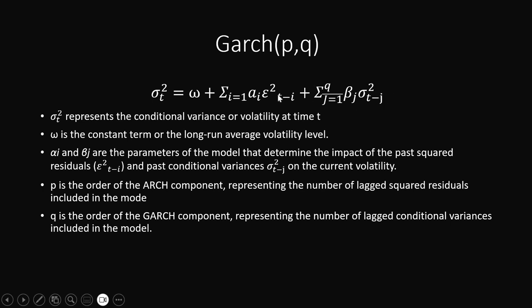GARCH includes both the previous residual squares and the previous variance — both are considered to be impacting today's variance. So sigma-squared-t represents the conditional variance or volatility at time t. Today's volatility depends on omega, which is the constant long-term average volatility level, plus the ARCH component and the GARCH component. The parameter alpha-i captures how previous residual squares impact today's variance, and beta-j captures how previous variances impact today's variance.